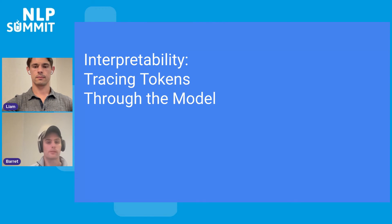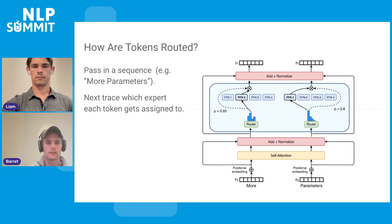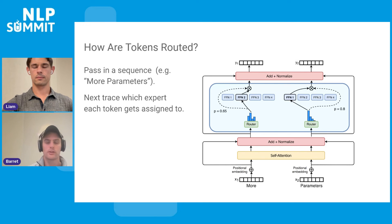Sparse expert models also have a natural extra layer of interpretability that dense layers don't have. We're going to go through and look at some routing decisions being made token by token. As an example, we pass in tokens like 'more parameters' to each expert layer. They go through the routing algorithm and select the top-1 expert. We send in different tokens, trace what experts they go to, record it, and see if we can observe interesting semantic groupings.